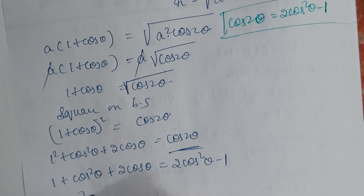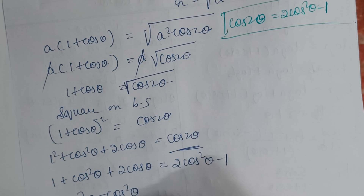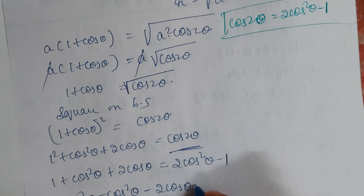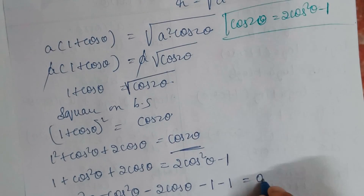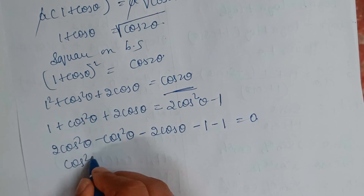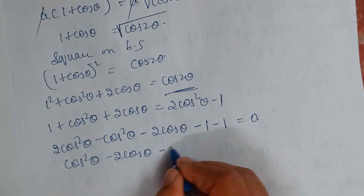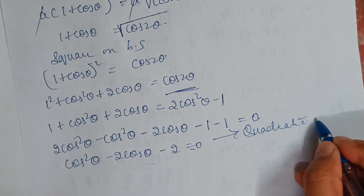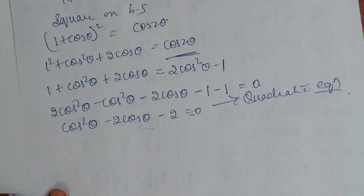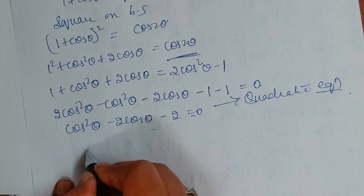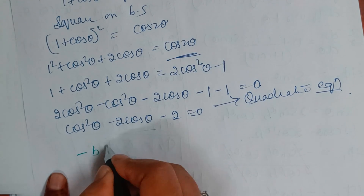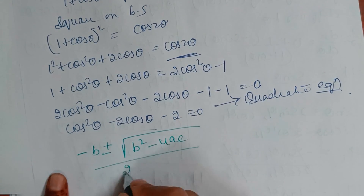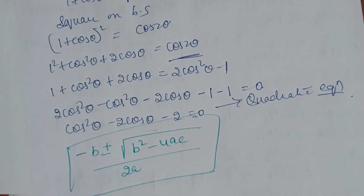Rearranging: cos²θ − 2 cos θ − 2 = 0. This has become a quadratic equation in cos θ. Using the quadratic formula: cos θ = [−b ± √(b² − 4ac)] / (2a), where a = 1, b = −2, c = −2.